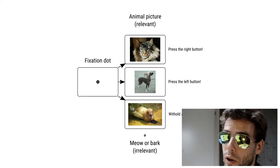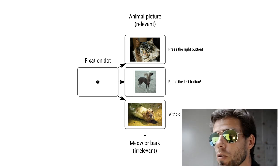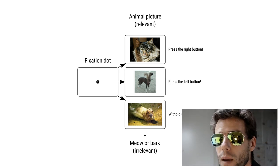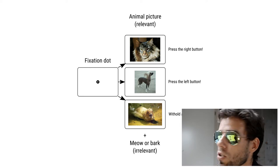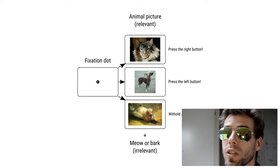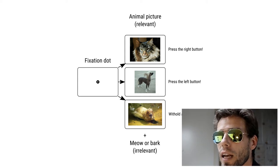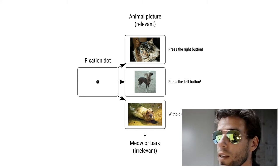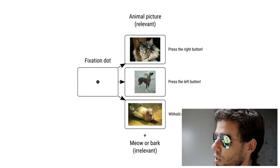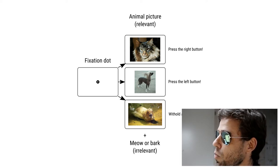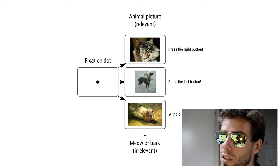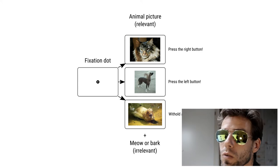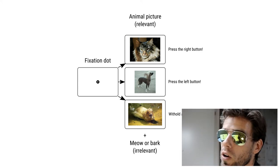We're going to create a complete experiment in this tutorial — the Cats, Dogs, and Capybara experiment. It's a trial-based experiment, meaning we have very short trials repeated over and over with slight variations, as is commonly done in cognitive psychology. Every trial starts with a fixation dot, then we present an image — either a cat, a dog, or a capybara. The participant has to classify the animal: press the right button for a cat, the left button for a dog, and withhold a response for a capybara. So the capybara is a no-go trial.